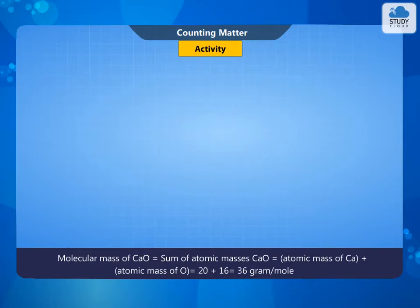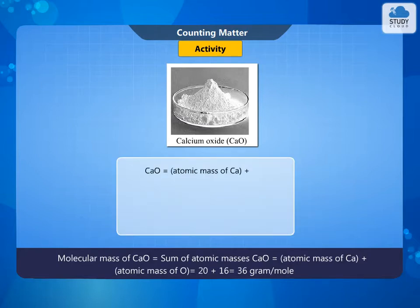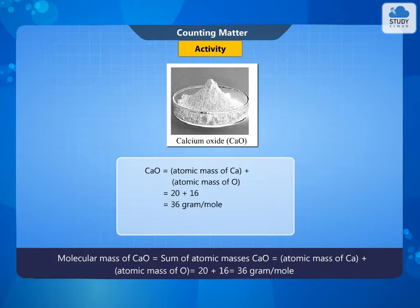Molecular mass of CaO is equal to the sum of atomic masses. CaO = atomic mass of Ca + atomic mass of O = 20 + 16 = 36 grams per molecule.